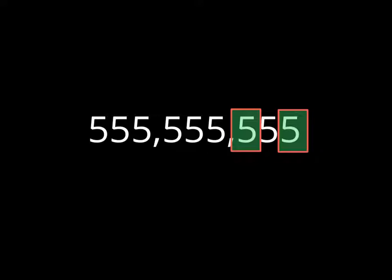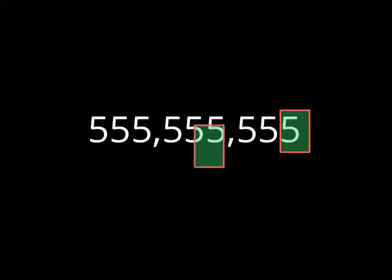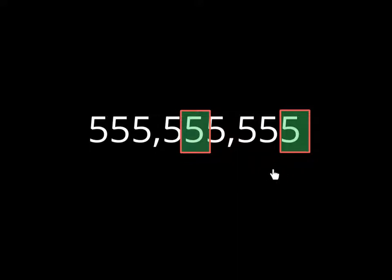Now you can see that this 5 is 100 times greater than this 5. The first 5 is 1,000 times greater than the second 5. And now the first 5 is 10,000 times greater than the second 5. How do I figure out it's 10,000 times bigger? Every time we move one place over, it's multiplying by 10 — so it's 10 times 10, which is 100, times 10, which is 1,000, times 10, which is 10,000.